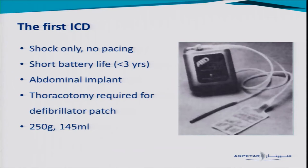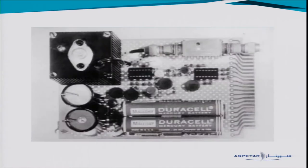This is the first ICD. It was quite large — so big it had to go into the abdomen as a subcutaneous implant, with a very short battery life, estimated around three years but in reality only lasting between one and two years. There was a lead going into the superior vena cava and a defibrillation patch on the external surface of the heart, which required a thoracotomy for implantation. The first prototype even contained household electrical equipment, including common Duracell batteries.